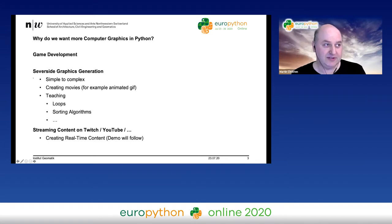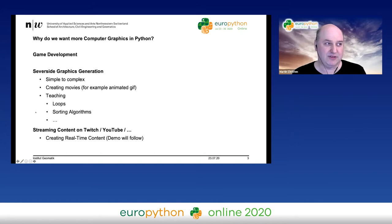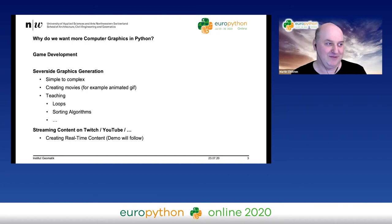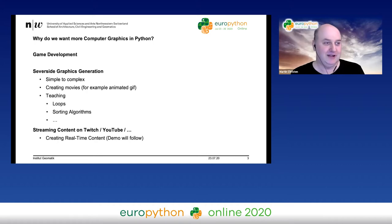I have two other things in mind. The first is server-side graphics generation — I want a server that can create movies or animations. I also want it for teaching; for example, it's perfect to explain how loops work if you have graphics, or sorting algorithms — you can display how they work. It's also nice to create real-time content for streaming on Twitch, YouTube, or Zoom.